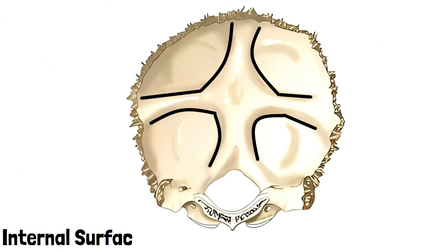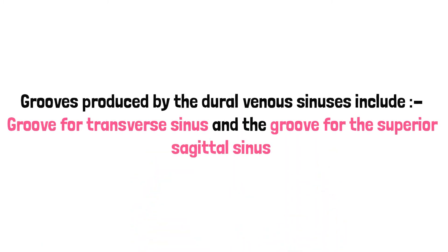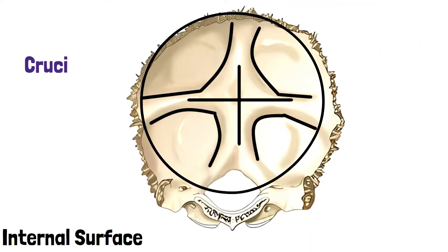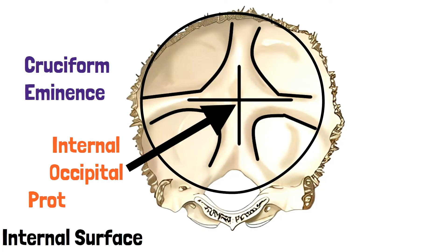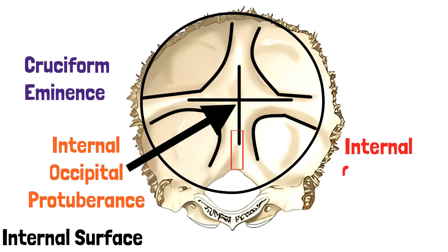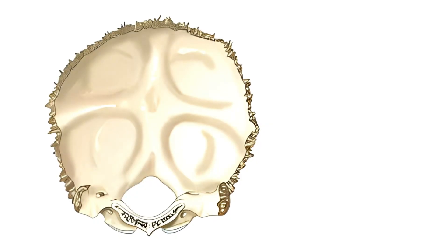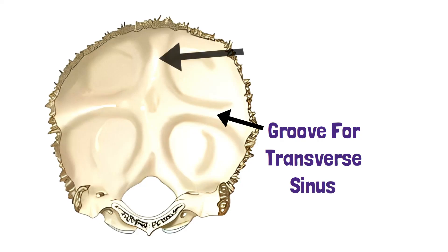Now let's have a look at the features of the internal surface. This is the internal surface of the bone. These areas outlined in black are the grooves produced by the dural venous sinuses, arranged like a cross and known as the cruciform eminence. At the center of the cross is the internal occipital protuberance. This is the internal occipital crest, extending from the internal protuberance on the midline to the posterior border of the foramen magnum. This is the groove for the transverse sinus, and this is the groove for the superior sagittal sinus. With this we complete the anatomy of the occipital bone.